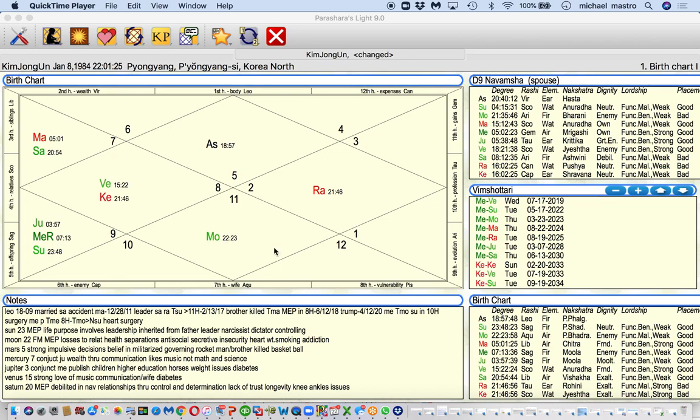We want to look to see where the mooltrikona signs take precedence. For example, we have Virgo and Gemini are ruled by Mercury, but Virgo is the mooltrikona sign. It is the sign that Mercury is most closely linked with. So many planets rule two signs, but we're going to look at where the mooltrikona signs are, what houses you find them in is what we came here to work on.